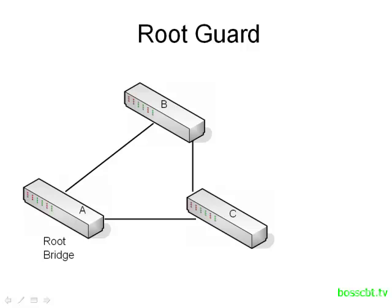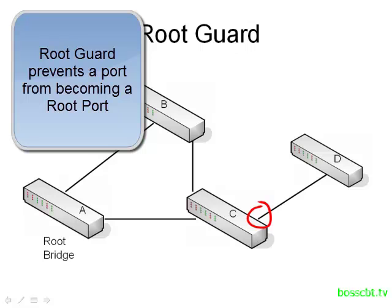Root Guard is going to protect our network differently than BPDU Guard. Let's say we have a simple network — Switch A is our root bridge and B and C are the two non-root bridges. But let's say we also have switch D on the network, and we don't want switch D to ever become the root bridge — it breaks our design, it's a sub-optimal switch, and it's just not a good candidate. Well, if we enable Root Guard on the port on switch C, Root Guard will ensure that this port can never become the root port on switch C.